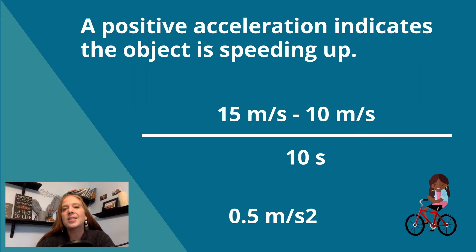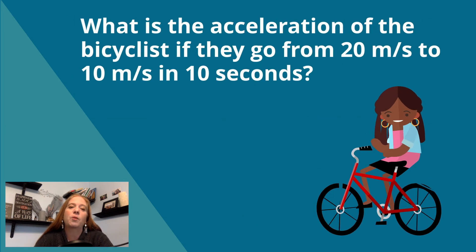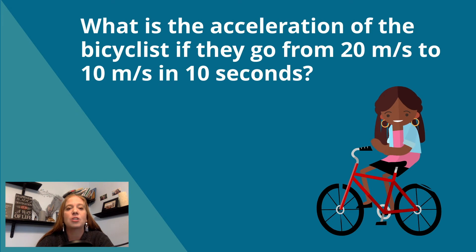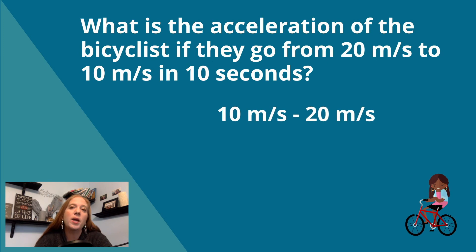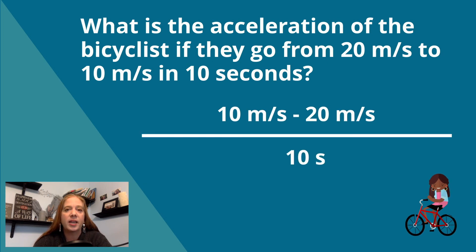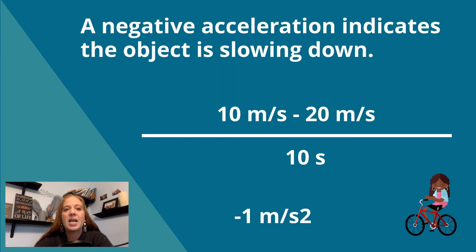A positive acceleration indicates the object is speeding up. What is the acceleration of the bicyclist if they go from 20 meters per second to 10 meters per second in 10 seconds? 10 meters per second minus 20 meters per second, all over 10 seconds, gives you negative 1 meter per second squared. A negative acceleration indicates the object is slowing down.